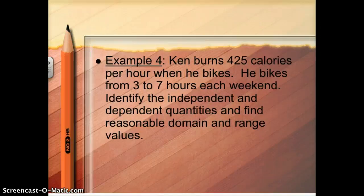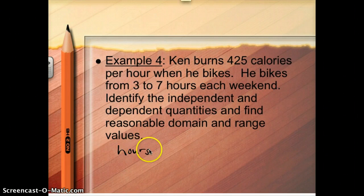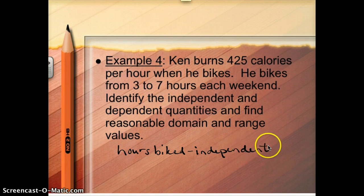Here's a more complicated problem. Ken is biking and burning 425 calories per hour. Every weekend he bikes from 3 to 7 hours. I need to identify which quantity is independent and which is dependent, and then find reasonable domain and range values. I'm comparing calories burned to hours biked. The calories he burns depends on how many hours he bikes. So hours biked is my independent quantity, and calories burned is my dependent quantity.